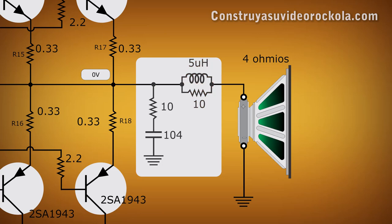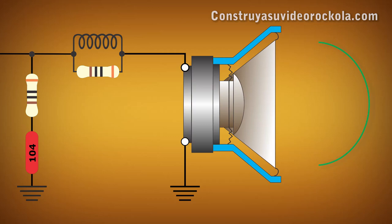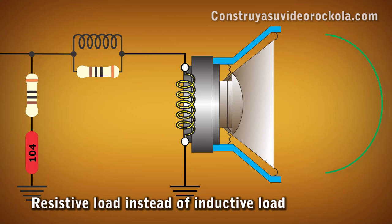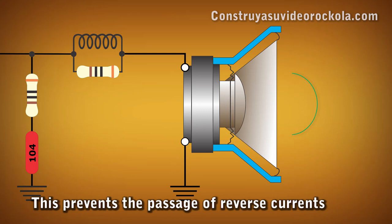The Zobel network or oscillation lock has several functions. In first place, it is used so that the amplifier sees at its output a resistive load, instead of the inductive load that presents the speaker. In second place, it avoids the reverse current generated by the speaker, that can get to damage the amplifier outputs.